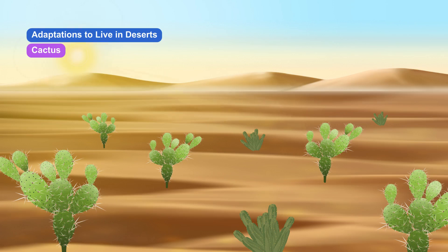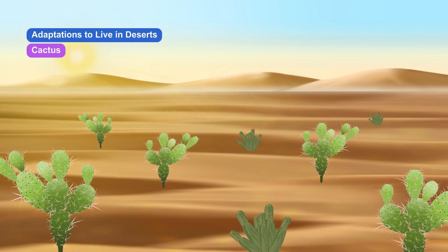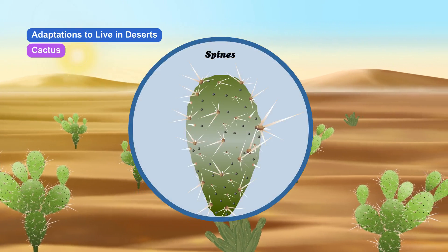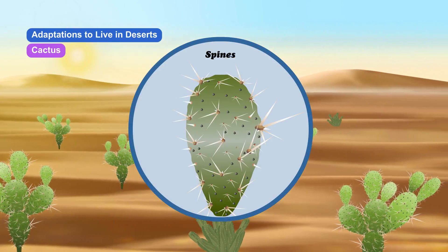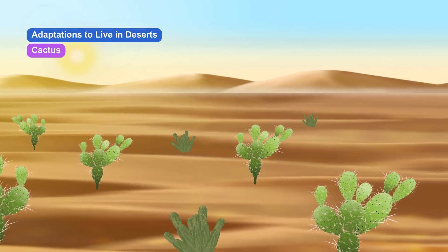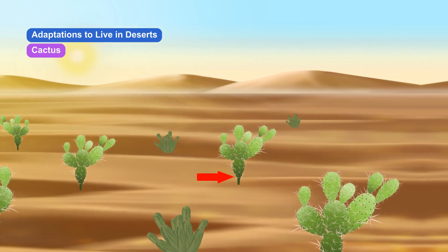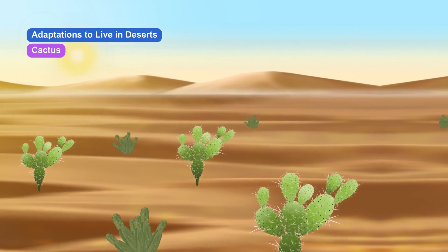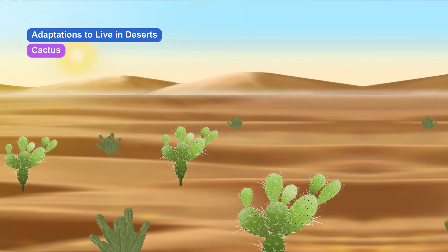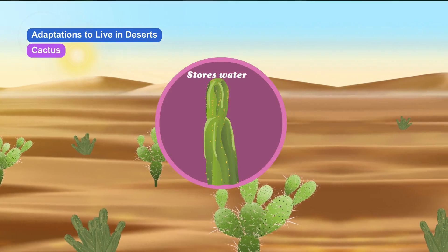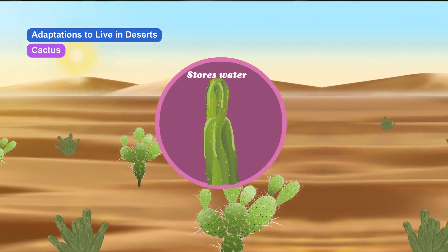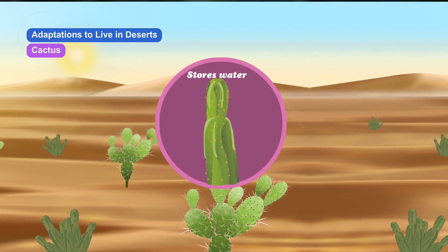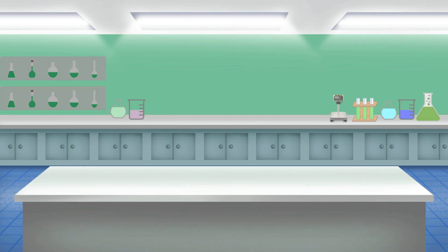Desert plants also have adaptations. The leaves are modified into spines so that they lose very little water due to transpiration. The stem is green in color and performs photosynthesis. It is also swollen, covered with a thick waxy layer and stores water. Roots go deep into the ground in search of water.